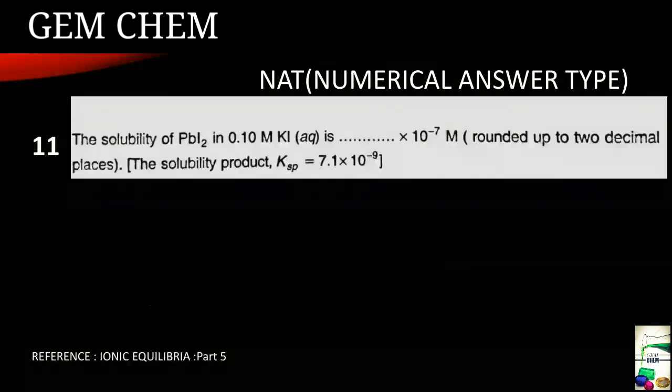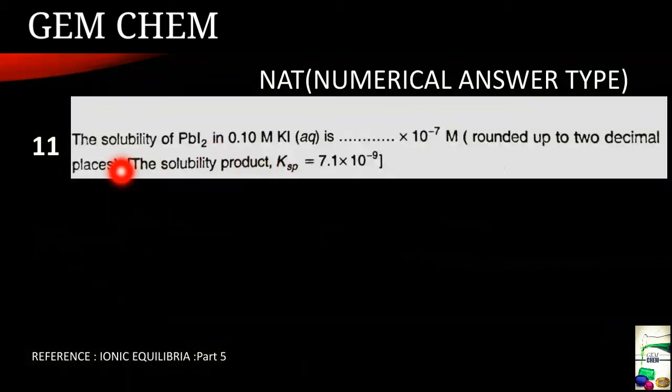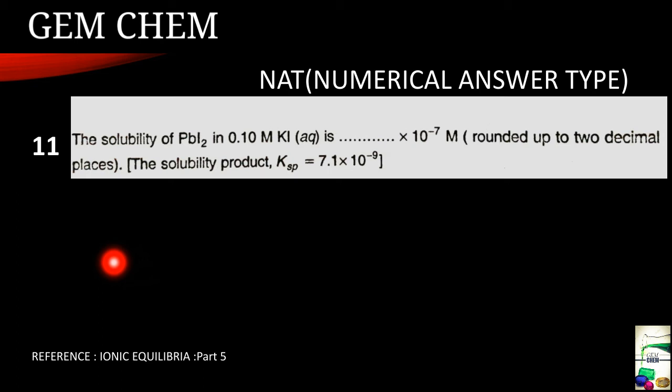Now we will go for the last question of this video. This is from ionic equilibrium part 5 video and the question is the solubility of lead iodide in 0.10 molar KI aqua solution is dash into 10 to the power minus 7 rounded up to 2 decimal places and the solubility product has been given. So we have to take out the solubility. Now for this if you have not watched the ionic equilibrium part 5 video then it is useless to solve this question, first watch it and then come. I will give the link in the description box as well as the i button present above this video.